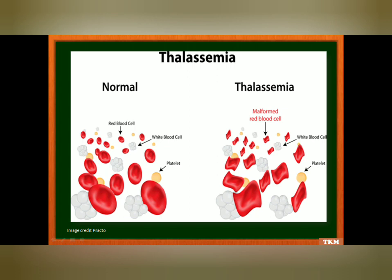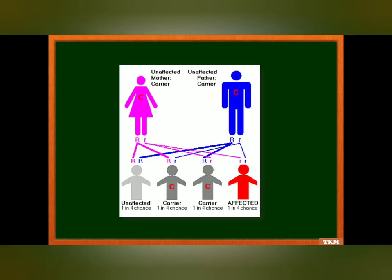In thalassemia, the red blood cells are malformed, which reduces the oxygen-carrying capacity of the RBC. In recessive gene disorders, both parents are carriers — this is why they are unaffected. But when they pass on their genes, there is a 50% chance the children will be carriers, a 25% chance they will be unaffected, and a 25% chance they will be affected.